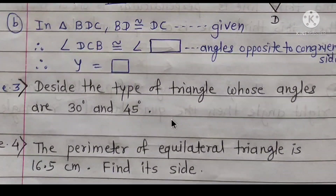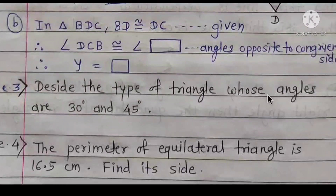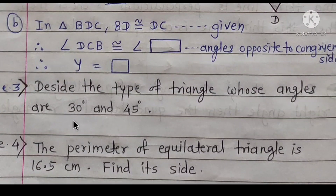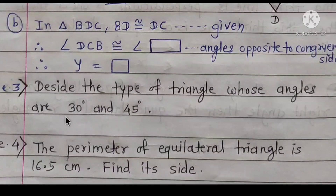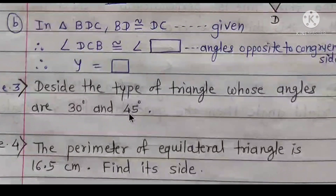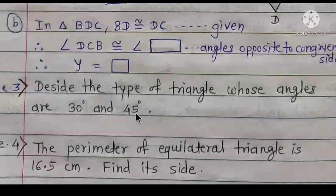Question 3: Decide the type of triangle whose angles are 30 degrees and 45 degrees. The sum of all angles of a triangle is 180 degrees. So the third angle is 180 minus (30 plus 45), which equals 180 minus 75, giving us 105 degrees.